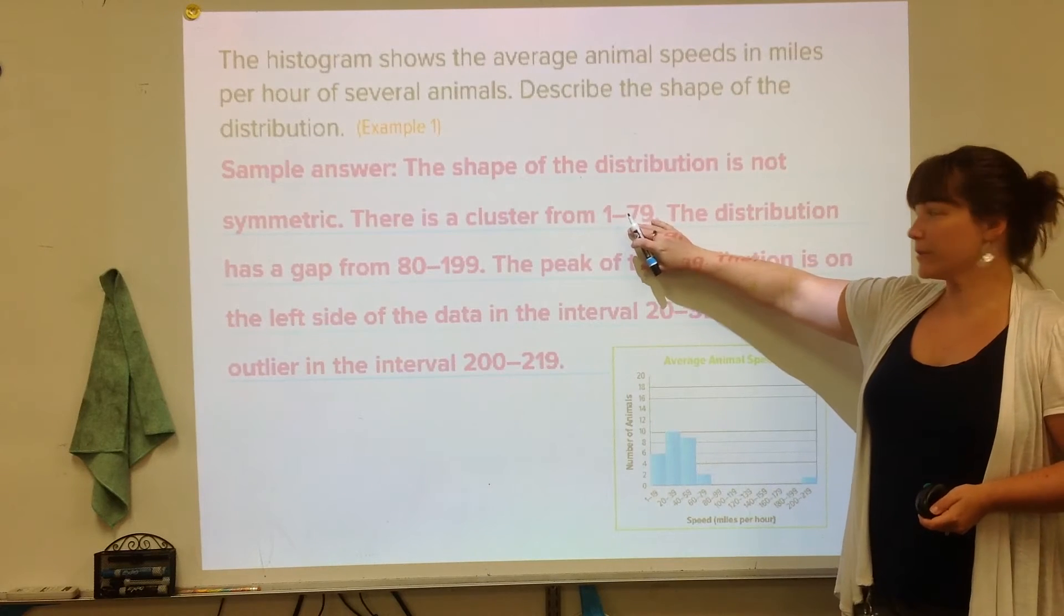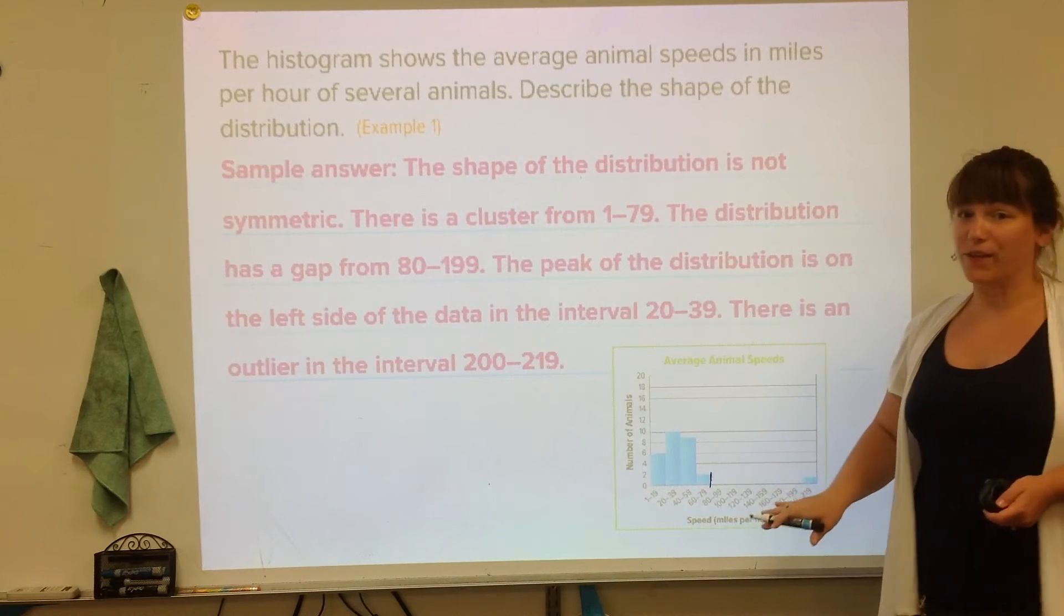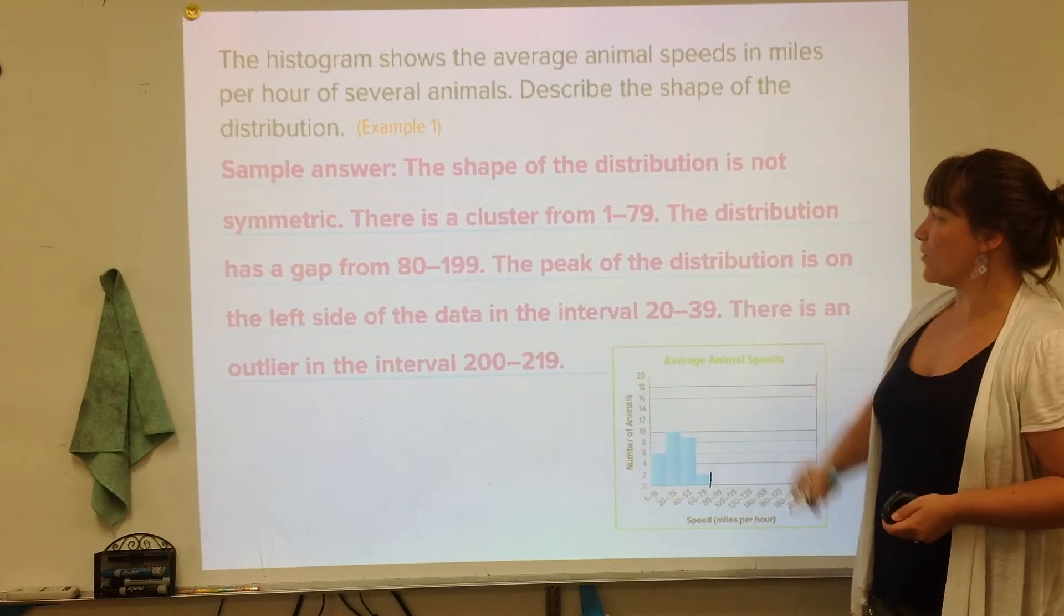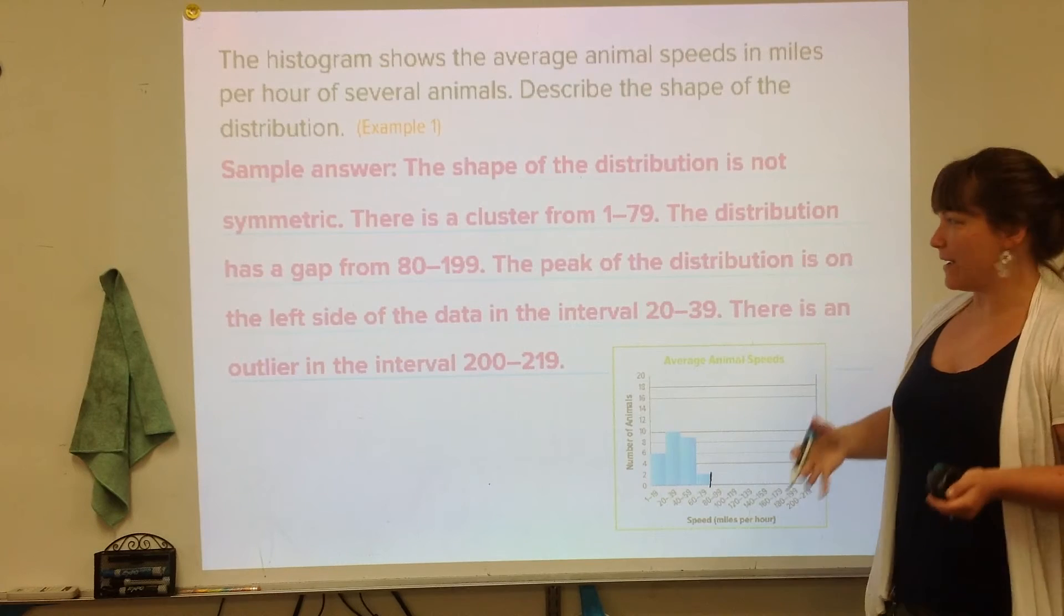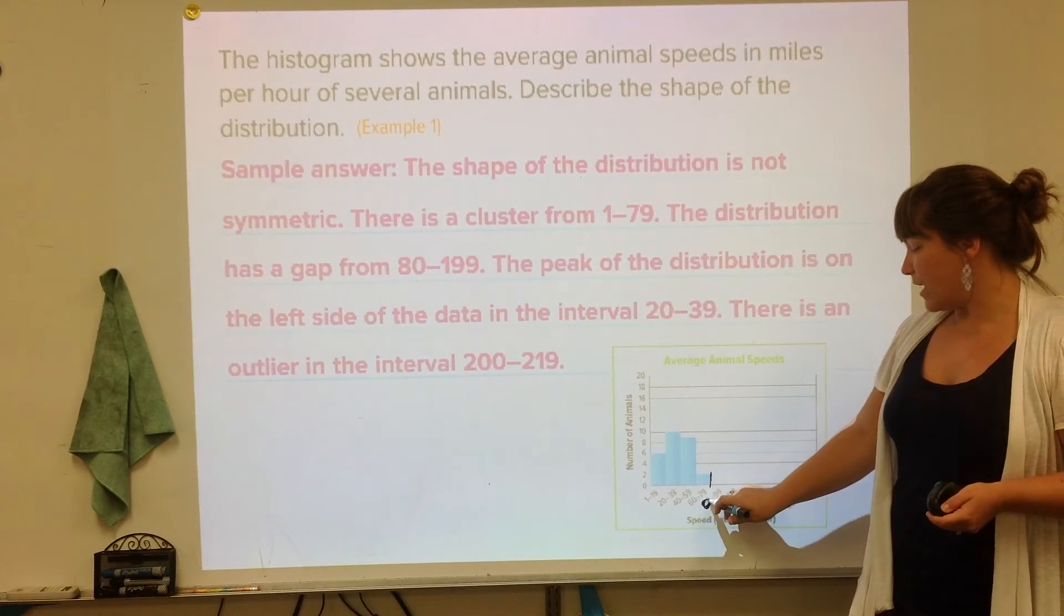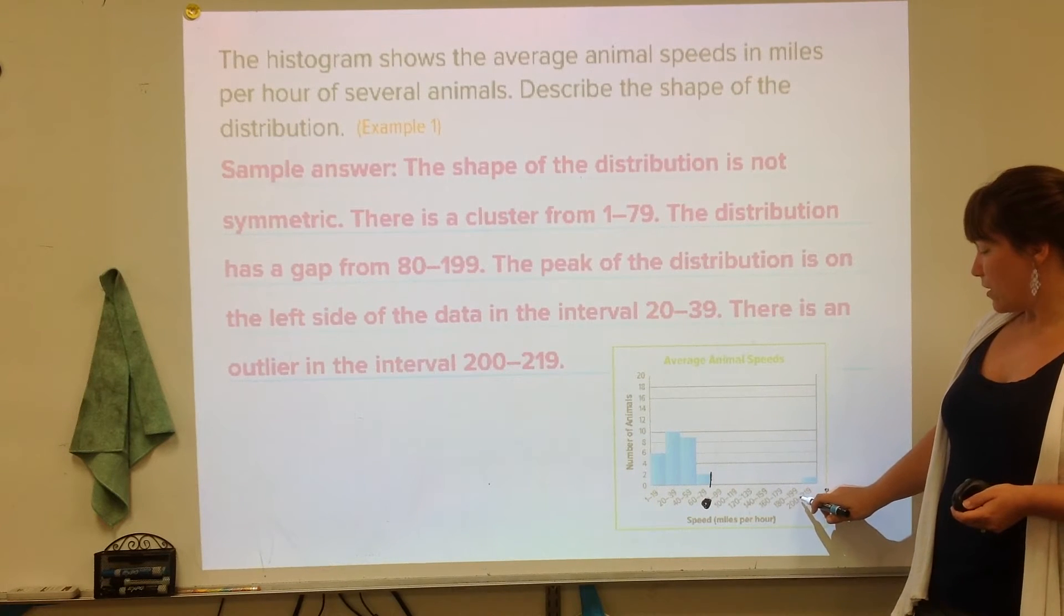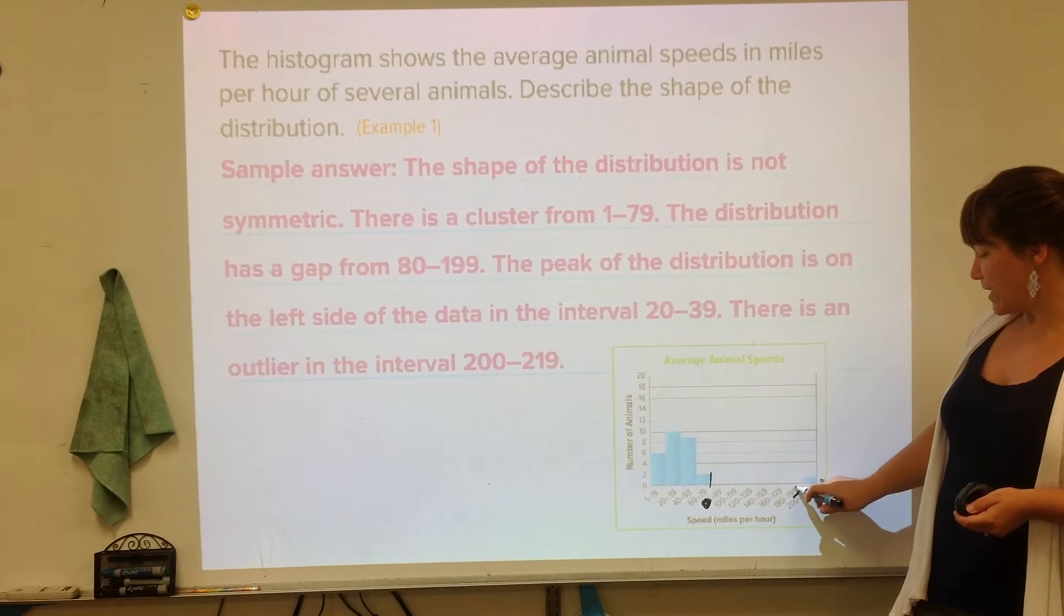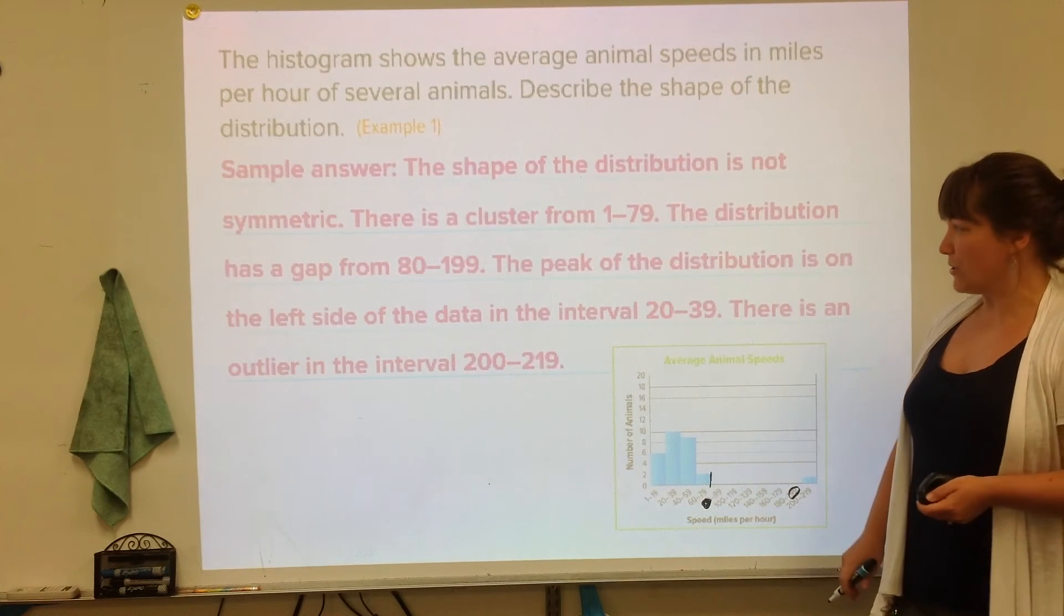There is a cluster from 1, and this point right here is 79. So that's what you're seeing from 1 to 79. Then talk about the gap. Where is that gap? The distribution has a gap from, you would just look down here, here's the 80, and then here is the 2, 199. So you just get those numbers from the bottom of the histogram.